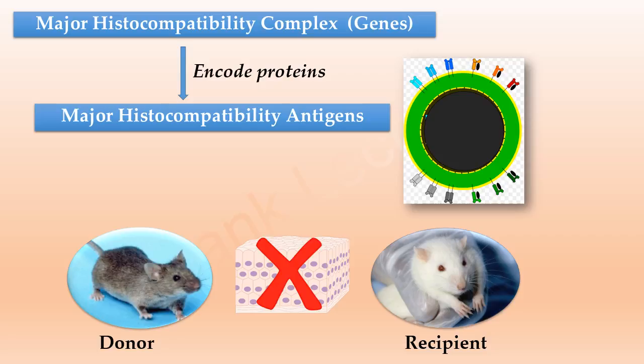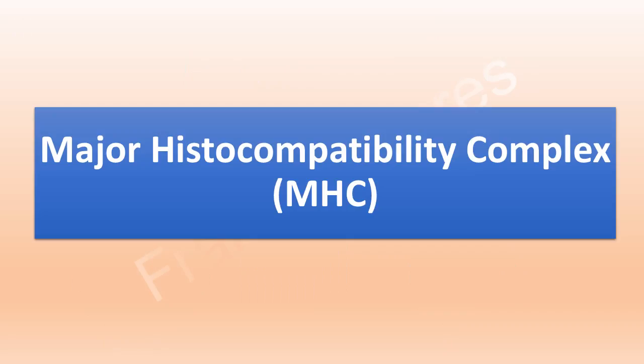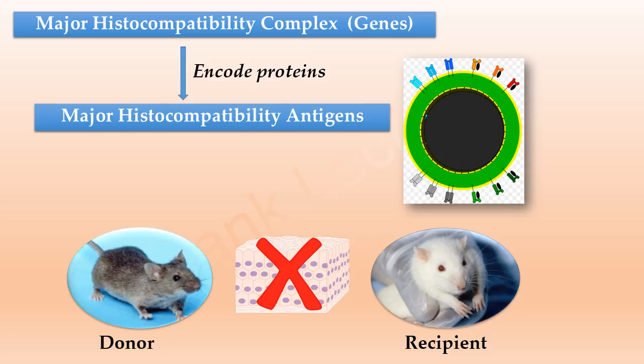When a tissue was transplanted from a donor mouse to a recipient mouse, the major histocompatibility antigens of the donor mouse were perceived as foreign or non-self by the recipient mouse. As a result, the immune system of the recipient mouse mounted an immune response and resulted in the destruction of the transplanted tissue.